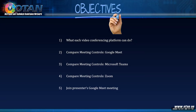We will compare meeting controls — first on Google Meet, next on Microsoft Teams, and then Zoom. We don't need to go too deep into Zoom since most of you have already used it and should be familiar with many meeting controls. Lastly, you're going to join my Google Meet — I tried opening a Google Meet while in Zoom and it worked. I also tried Microsoft Teams while in Zoom and that also worked, so we can have both or all three platforms open at once.